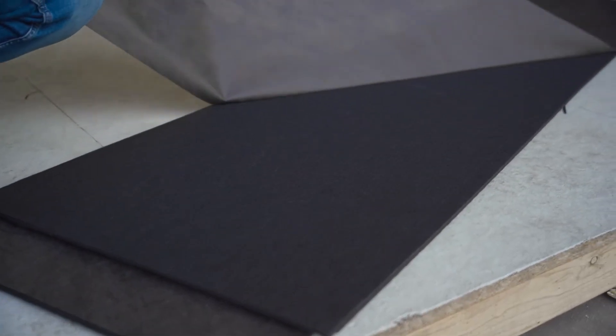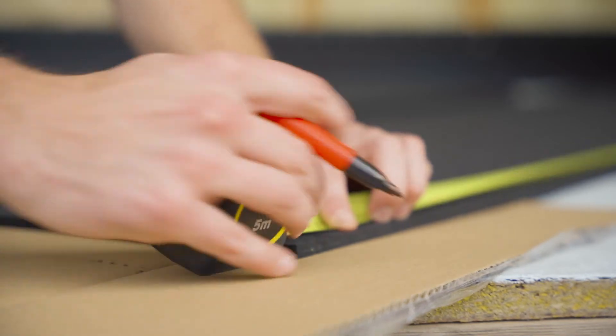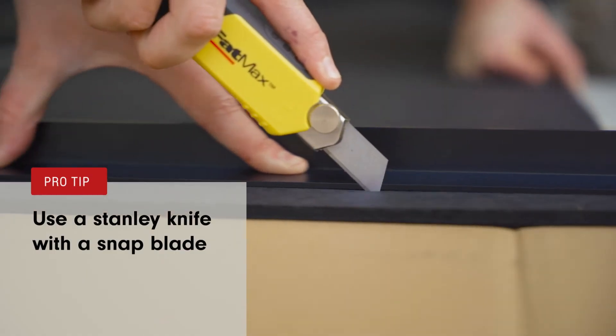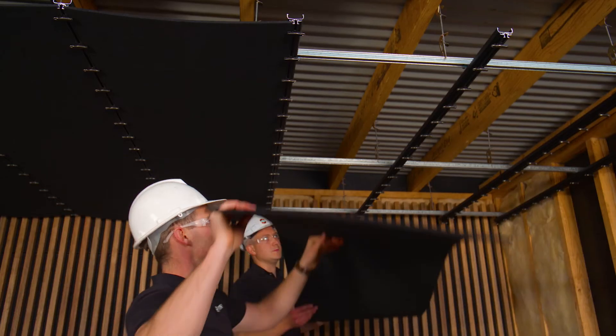Before you install it, make sure you cut each piece to length. Pro tip: when cutting the acoustic backing, we recommend a sharp Stanley knife with a snap blade so you can achieve a straight edge every time.